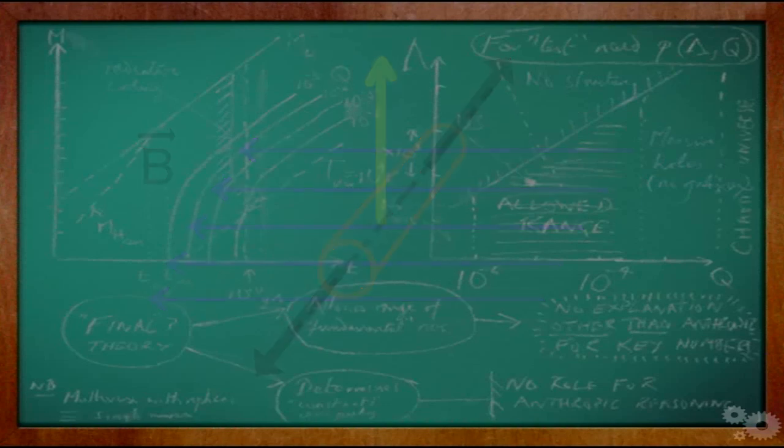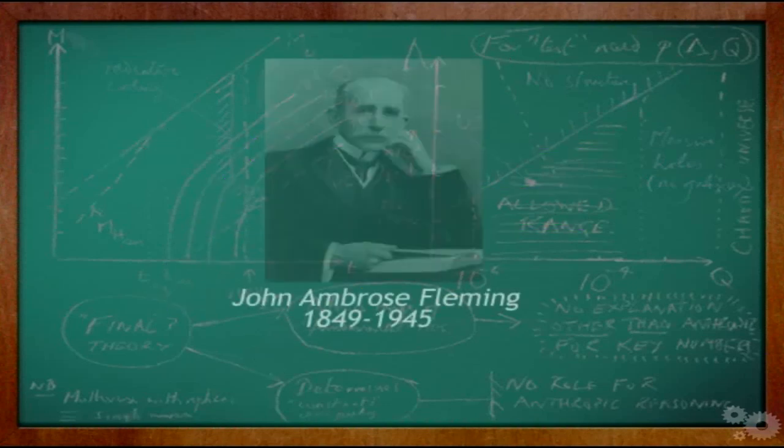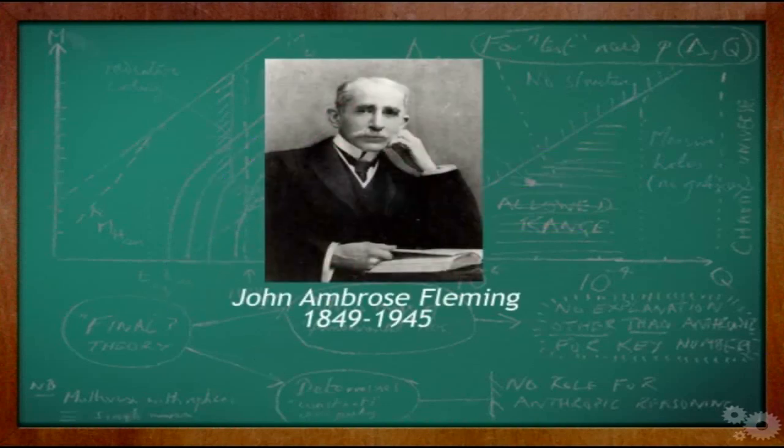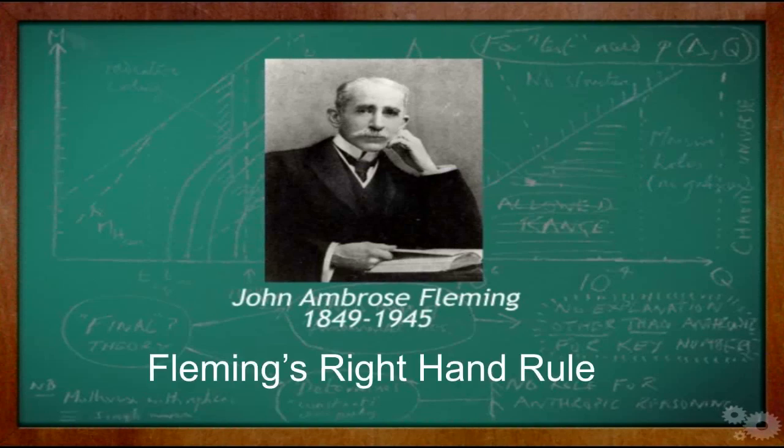In late 19th century, John Ambrose Fleming proposed a rule to find the direction of this induced current. The rule is popularly known as Fleming's right-hand rule or simply right-hand rule.